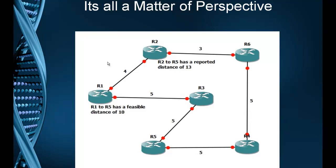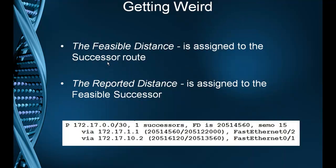Now here's where it gets weird. The feasible distance is actually assigned to a successor route. A successor route is your best path to a destination, and the successor route would show up in the routing table. But the reported distance is assigned to the feasible successor, and a feasible successor would show up in the topology table as a kind of backup route.